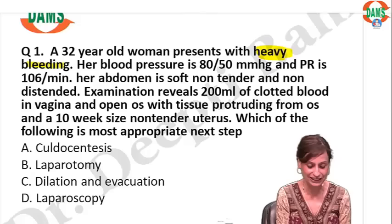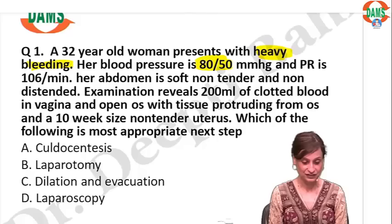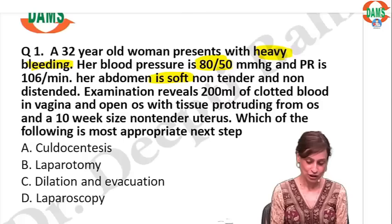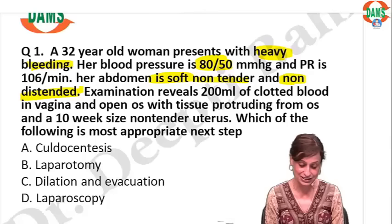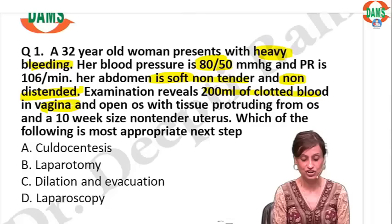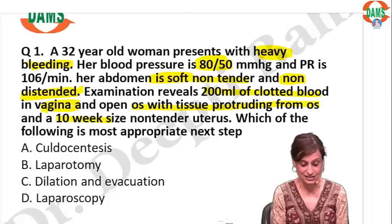Heavy bleeding. Her blood pressure is 80 by 50, her pulse rate is given. Abdomen is soft and non-distended. Examination reveals 200 ml of clotted blood in the vagina; the os is open with tissue protruding from it. The uterus is 10 weeks size. Which of the following is the most appropriate step?